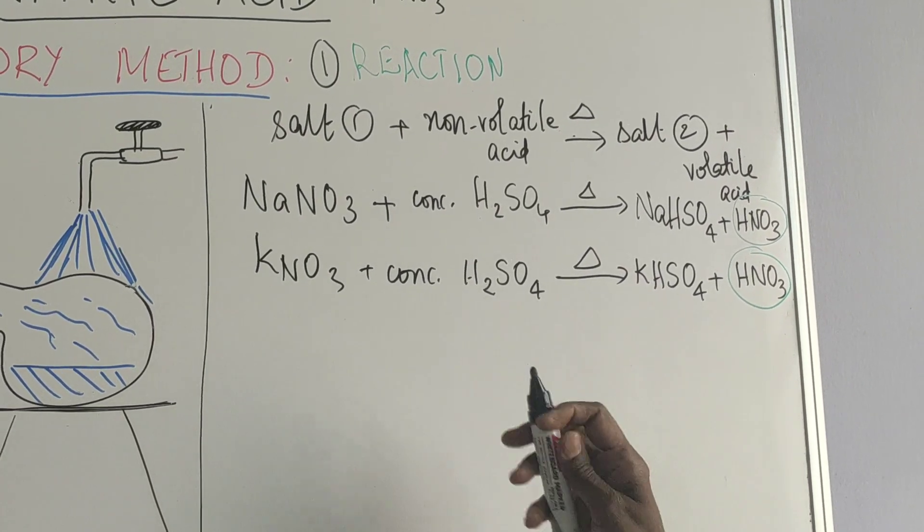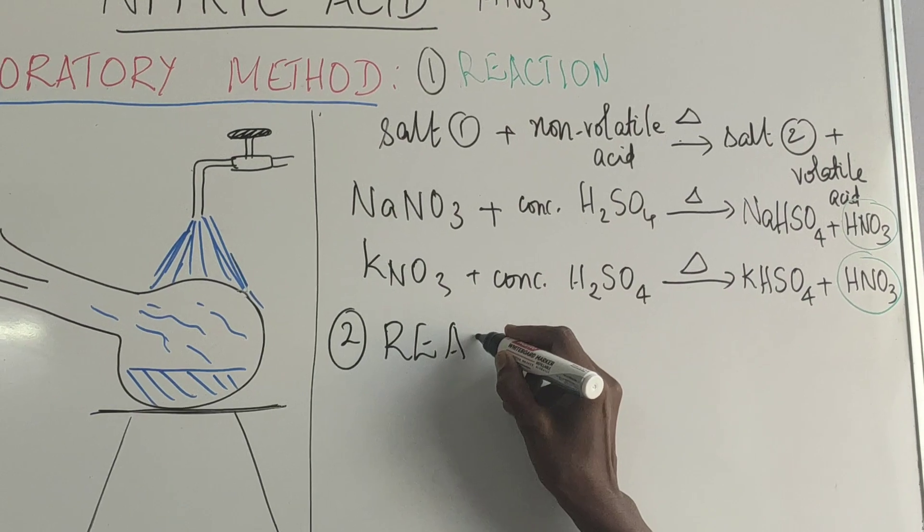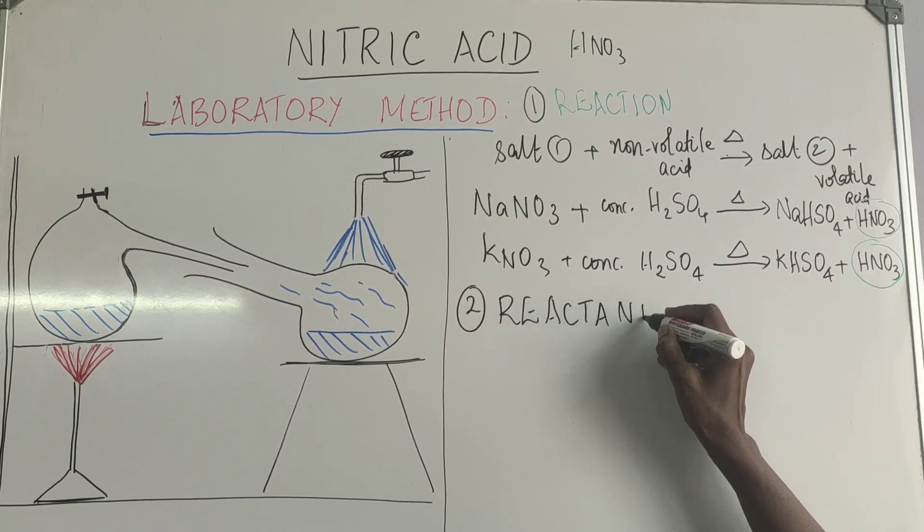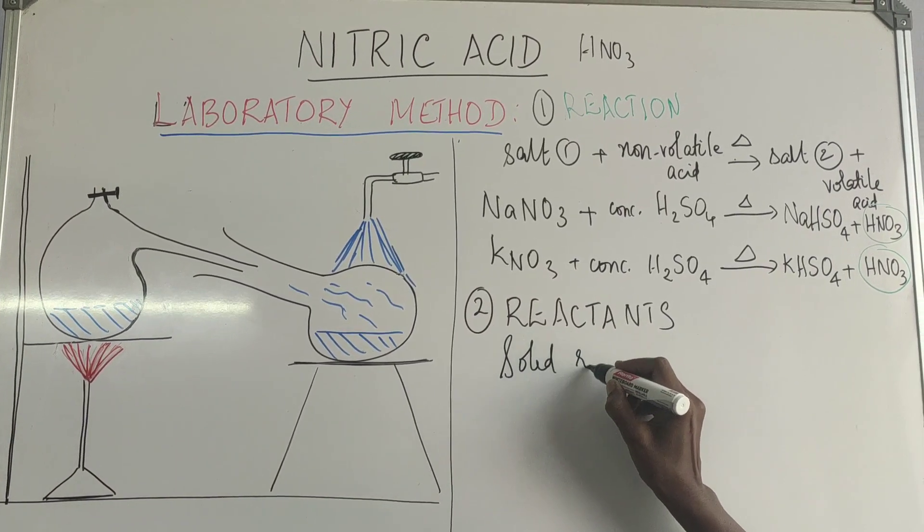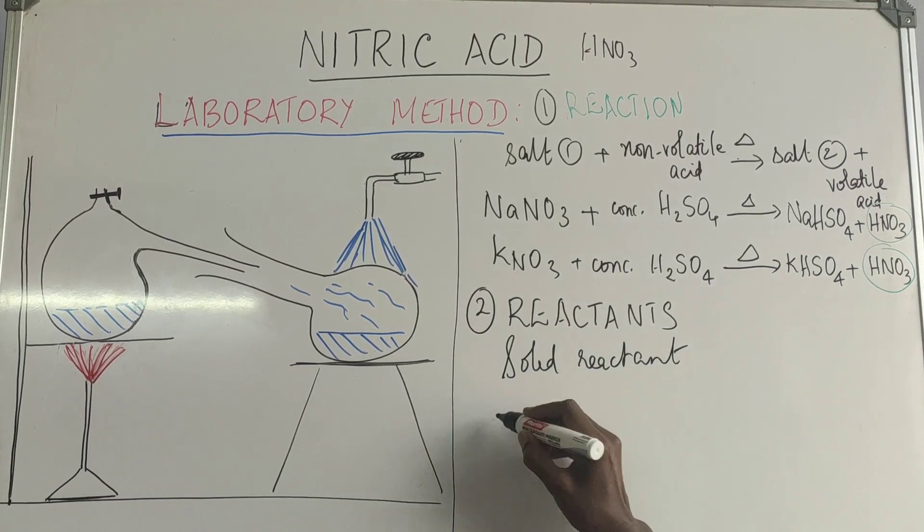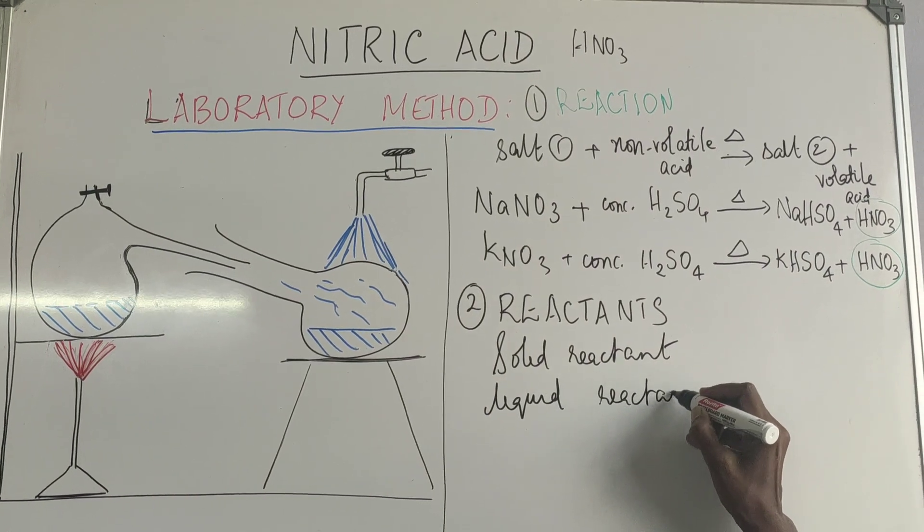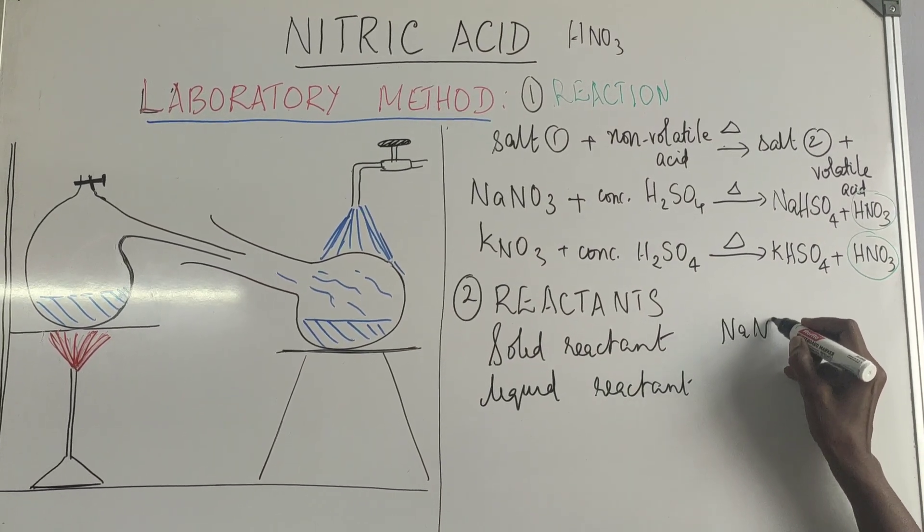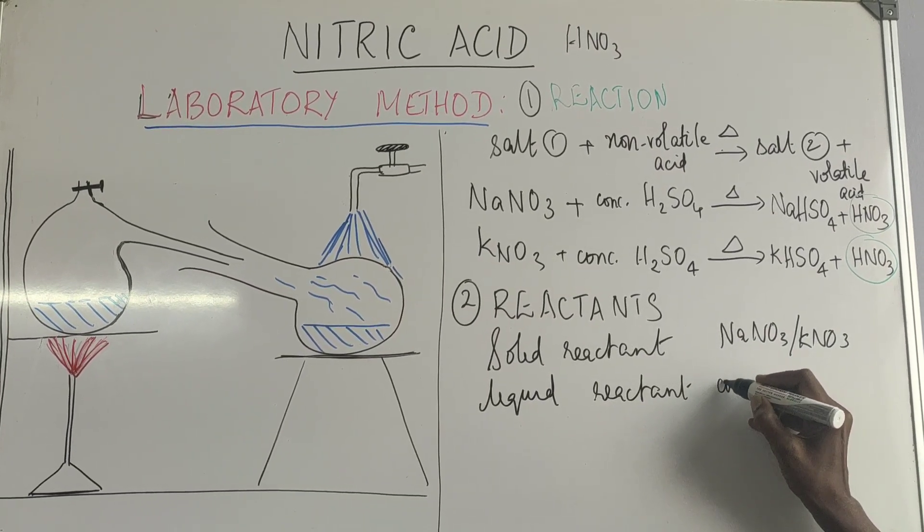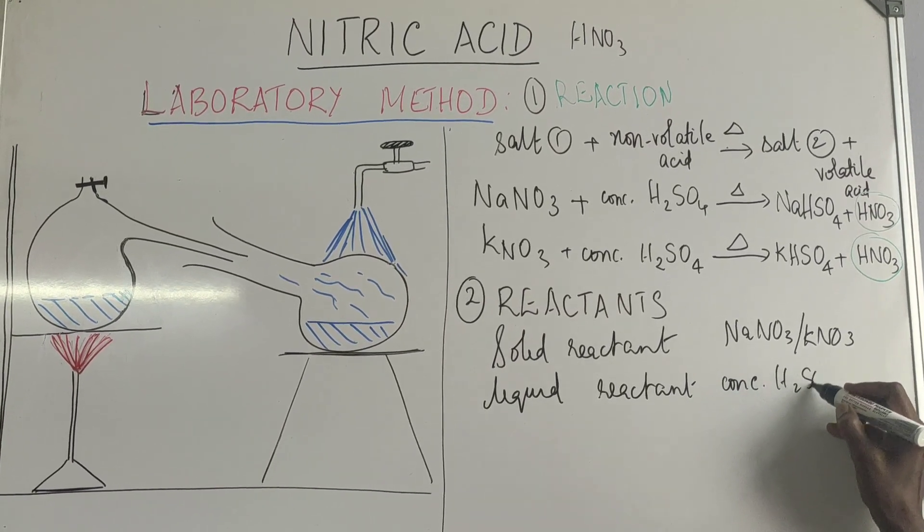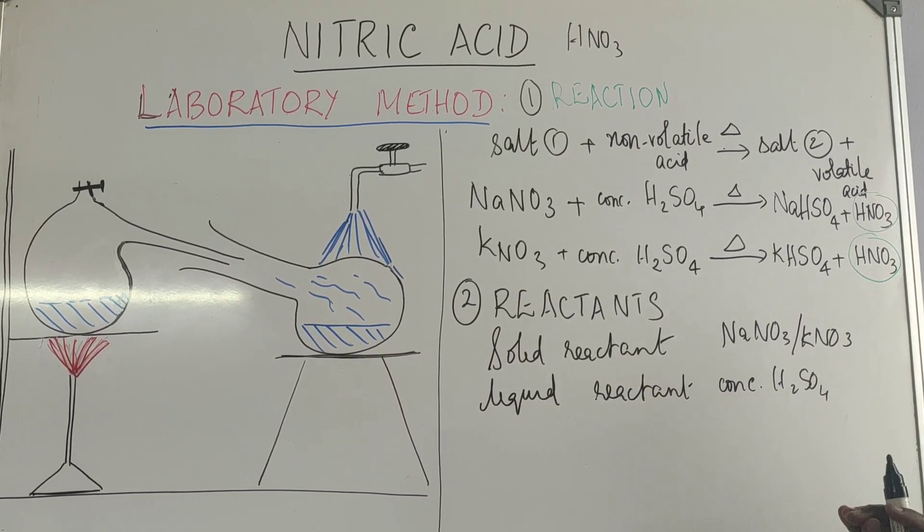And for this reaction to happen, we need some reactants. So the next thing that we go about is about the reactants. As we see in the above, there is one solid reactant and a liquid reactant. Which is the solid reactant? It is either sodium nitrate or potassium nitrate. And the liquid reactant is concentrated sulphuric acid. Because that is less volatile compared or it is the least volatile among the mineral acids.